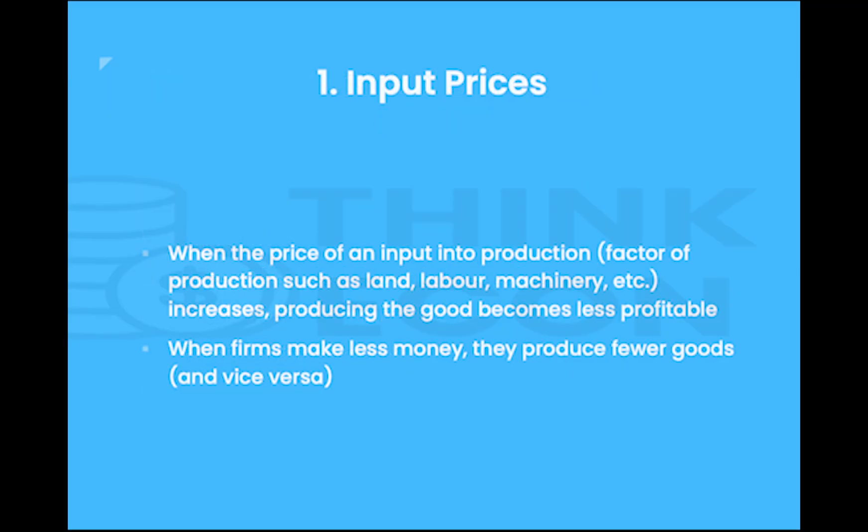First, we have input prices. Firms want to make maximum profit and to do so they must minimize their costs. When the price of an input into production — a factor of production such as land, labor, machinery, etc. — increases, producing that good becomes less profitable. When profits decrease, firms make less money and therefore produce fewer goods, causing a shift in the supply curve to the left. However, the opposite is also true: if the cost of a factor of production decreases, then supply will increase, causing a shift to the right of the supply curve.